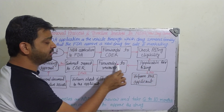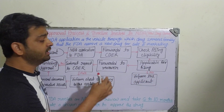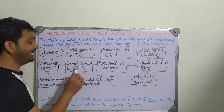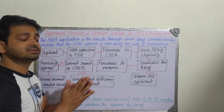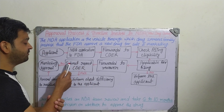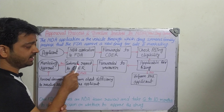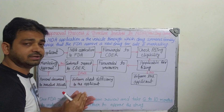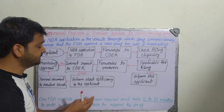If the application is found eligible, it will be forwarded to the reviewers. A review team within the FDA will review the application and submit their report back to the CDER — the Center for Drug Evaluation and Research — who will review all the documentation submitted along with the application.